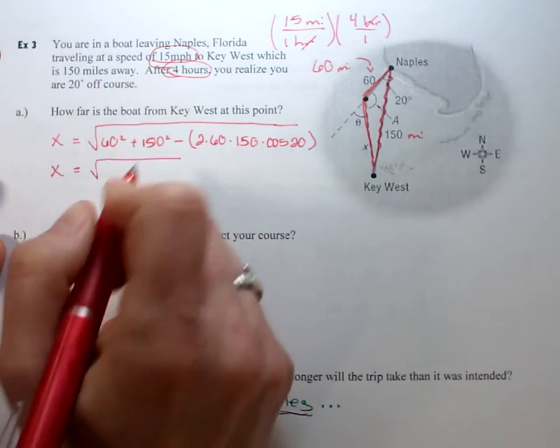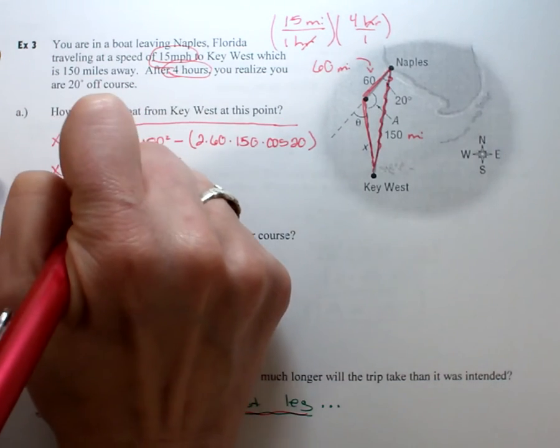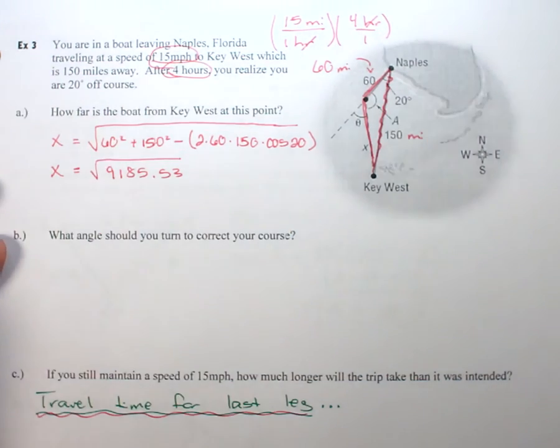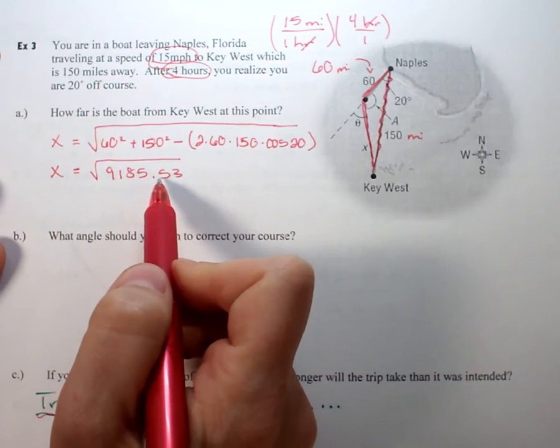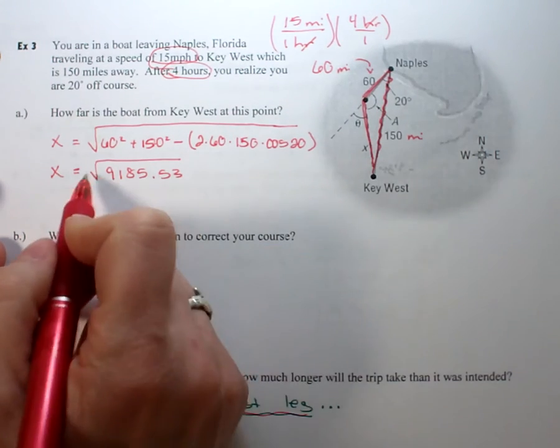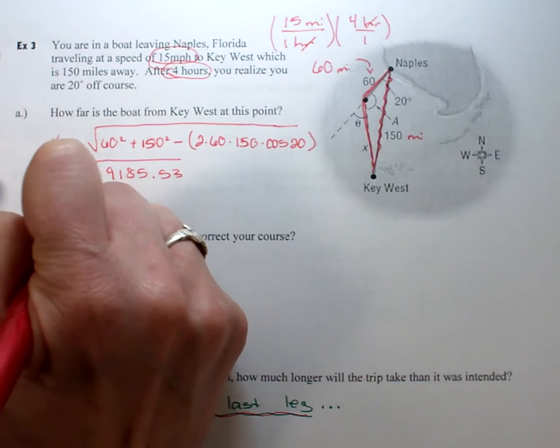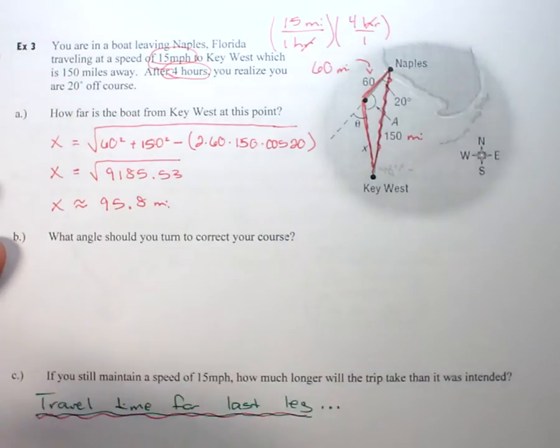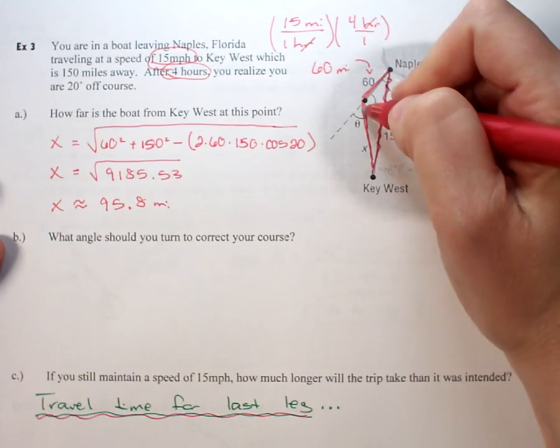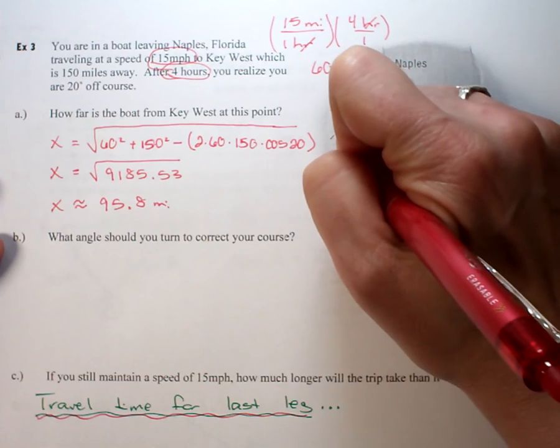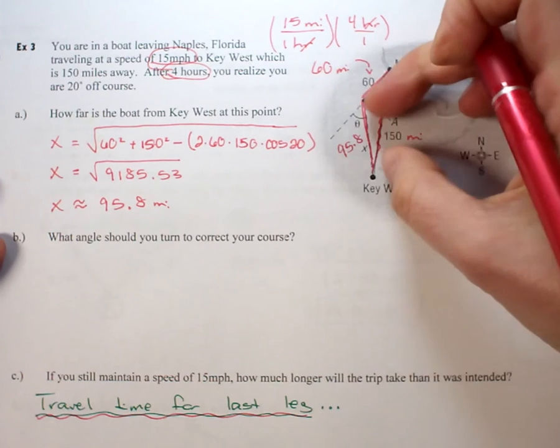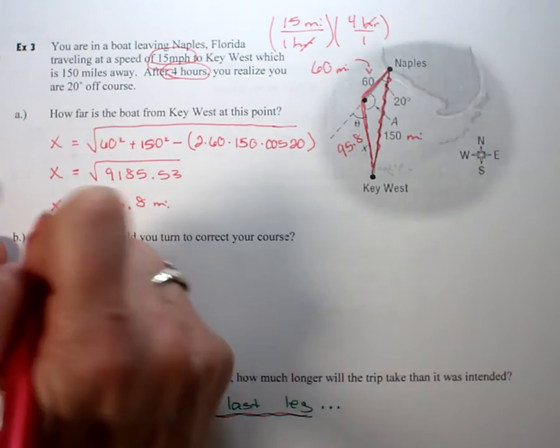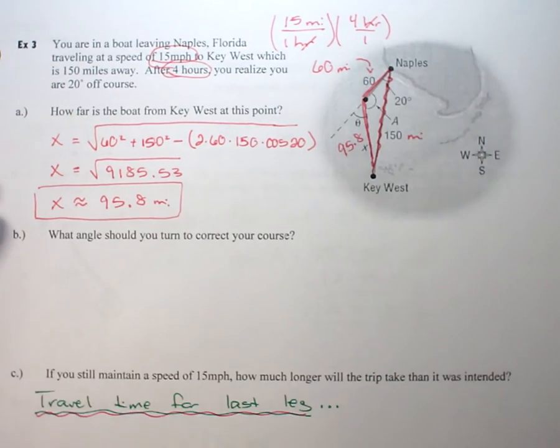When I type this in my calculator I should get 9185.53. Then we're gonna take the square root of that and you should get that we are 95.8 miles away from where we need to be. That's our first question - how far are we away from Key West.